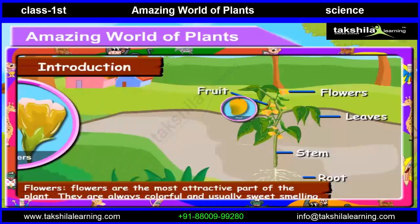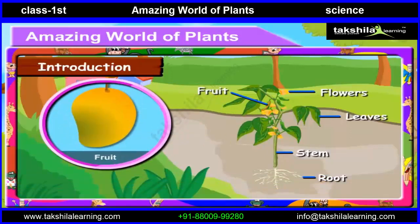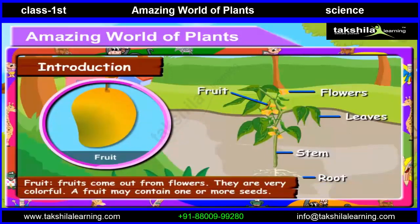Fruit. Fruits come out from flowers. They are very colourful. A fruit may contain one or more seeds.